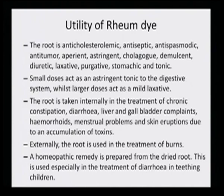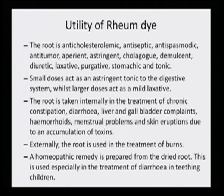Small doses act as an astringent tonic to the digestive system, while larger doses act as a mild laxative. The root is taken internally in the treatment of chronic constipation, diarrhea, liver and gallbladder complaints, hemorrhoids, menstrual problems, and skin eruptions due to accumulation of toxins. Externally, the root is used in the treatment of burns. A homeopathic remedy is prepared from the dried root, used especially in the treatment of diarrhea and teething children.